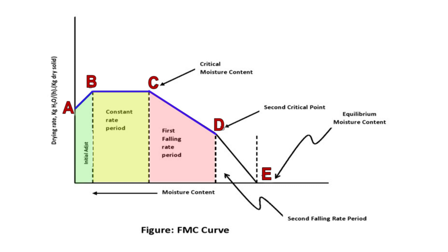The fourth section, D–E, is called the second falling rate period. During this period, the rate of drying falls even more rapidly than the first falling rate, and is dependent on the rate of diffusion of moisture vapor to the surface of the solid. Point E is referred to as the equilibrium moisture content. Beyond point E, the drying rate is equal to zero, meaning no drying process is taking place, and therefore the temperature and moisture content remain constant. Drying after point C is just a waste of time and energy.